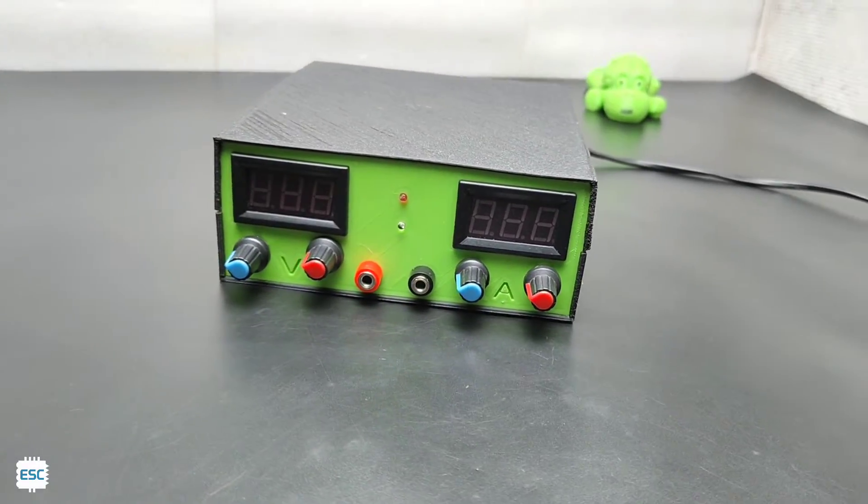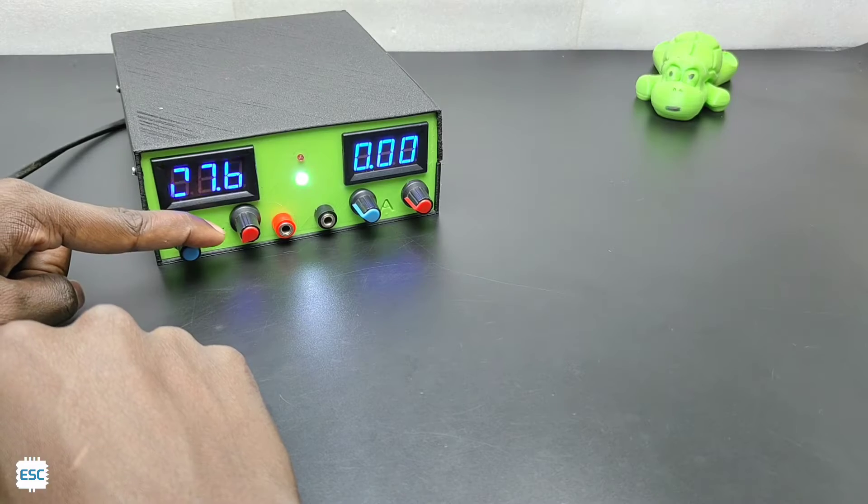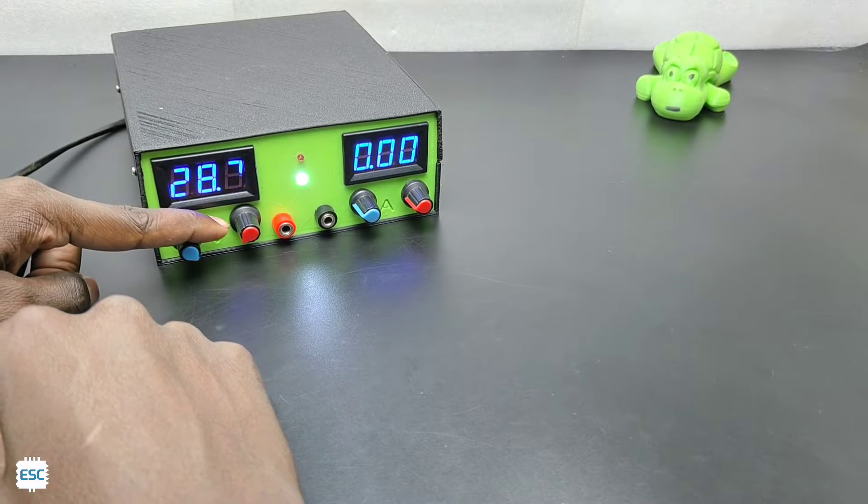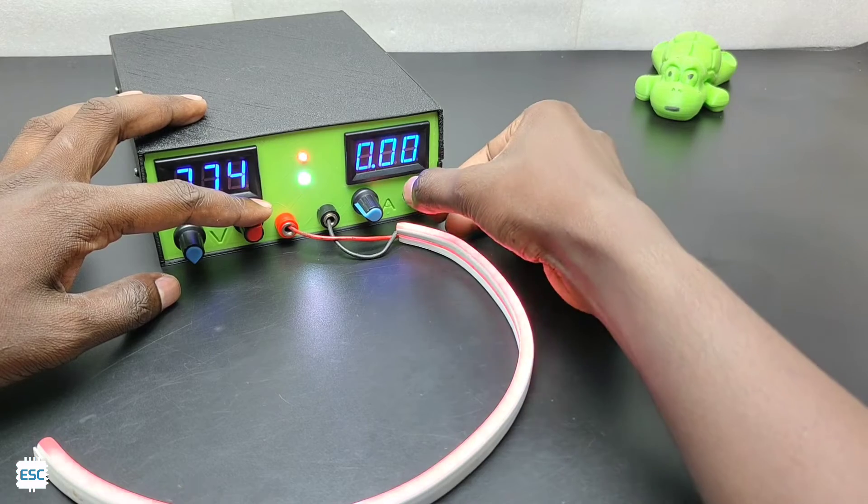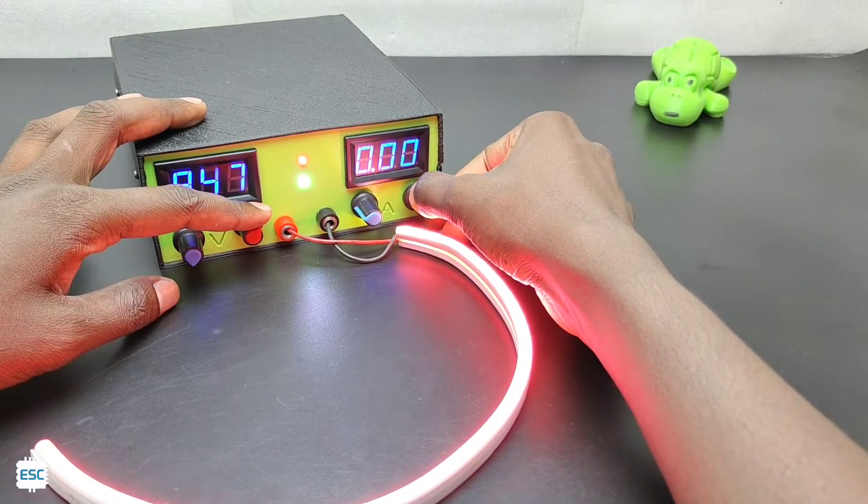This PSU can deliver 0 to 30V at up to 3A current. The enclosure is designed in Tinkercad and printed with my 3D printer. You can build similar by following this tutorial, now let's get started.